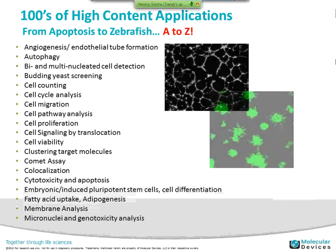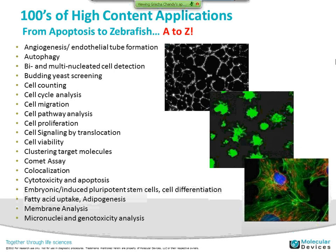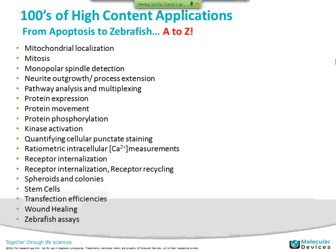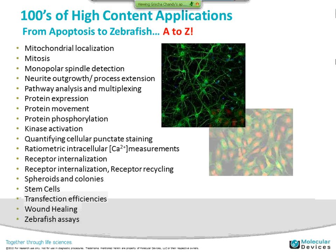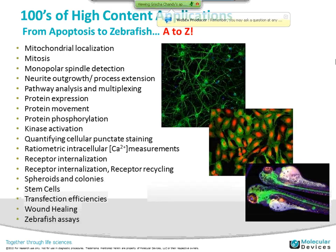A little bit about High Content Applications. We pride ourselves on being able to handle applications from A to Z — from cell-based processes to zebrafish. Our customers are doing assays with our systems including angiogenesis, autophagy, cell pathway analysis, cell viability, membrane analysis, micro-nuclei and genotoxicity analysis, mitochondrial localization, stem cell assays, protein phosphorylation, and small animal assays with zebrafish.